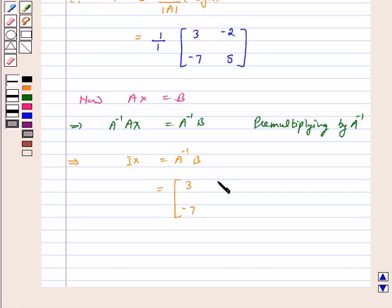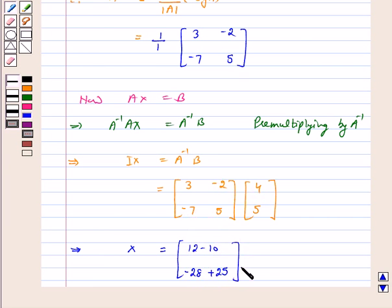Now A inverse is [3, -2; -7, 5] and B is [4; 5]. This gives us [12 - 10; -28 + 25] which is equal to [2; -3].